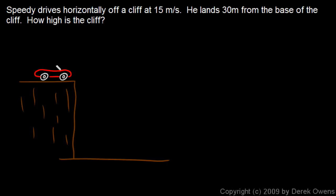In this problem we're told that Speedy drives horizontally off of a cliff and he lands 30 meters away from the base of the cliff. We need to find how high the cliff is.